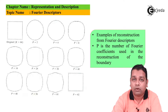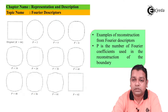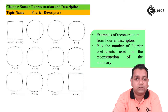Continuing with P = 40, P = 48, P = 56, P = 61, and at P = 62 we get the boundary shape that resembles the original shape with K = 64.